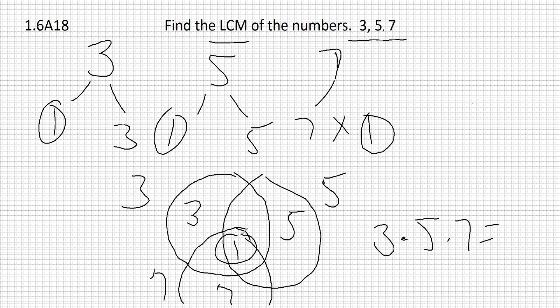So 3 times 5 is 15, 15 times 7, 35, 7, 8, 9, 10, 105.